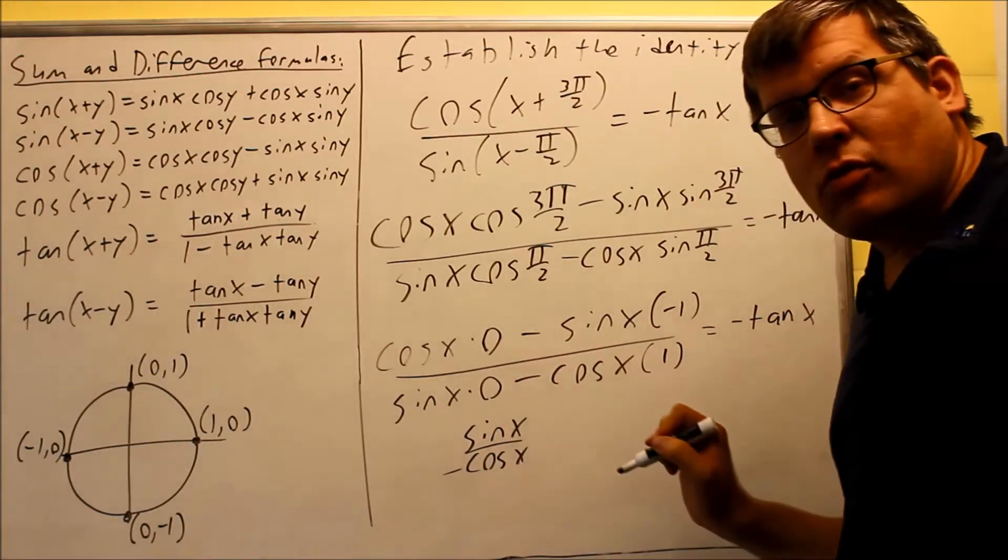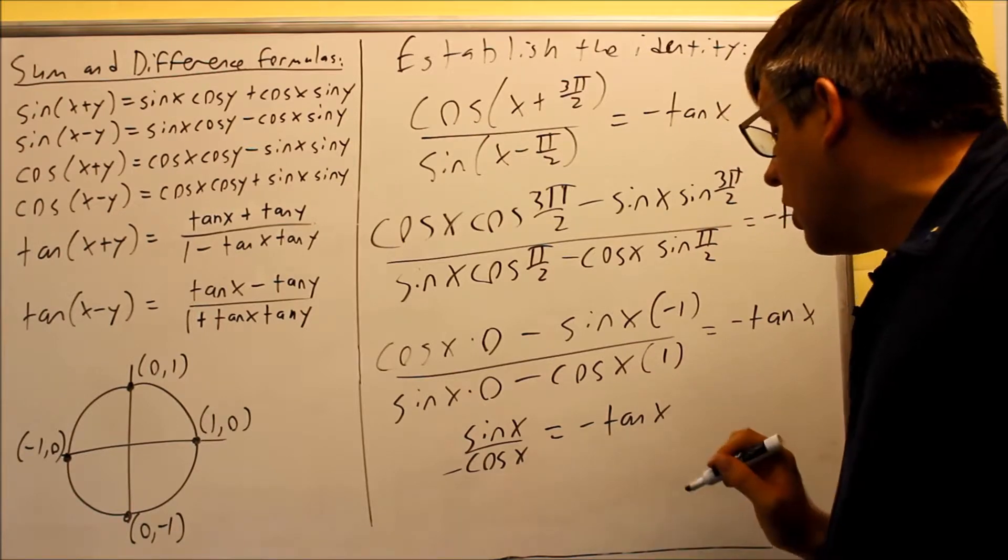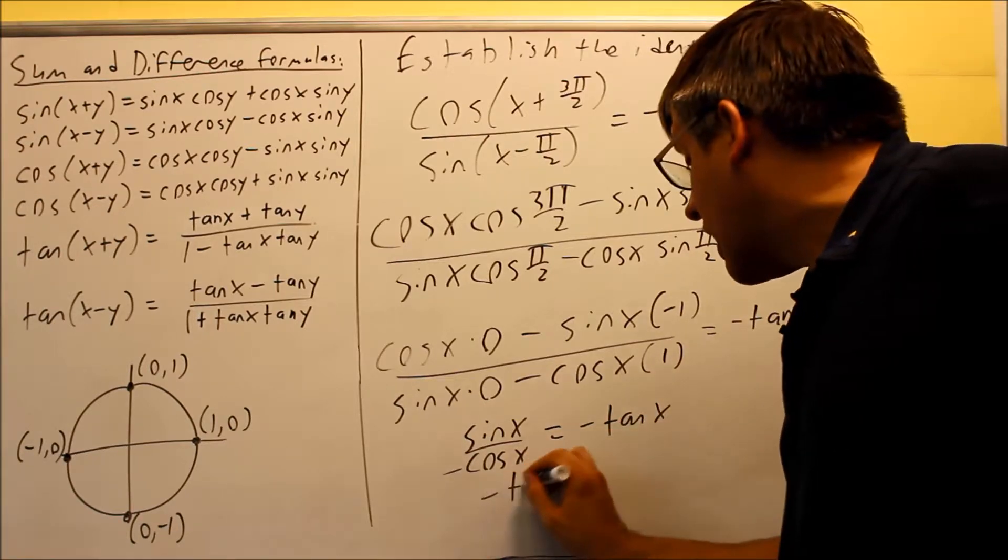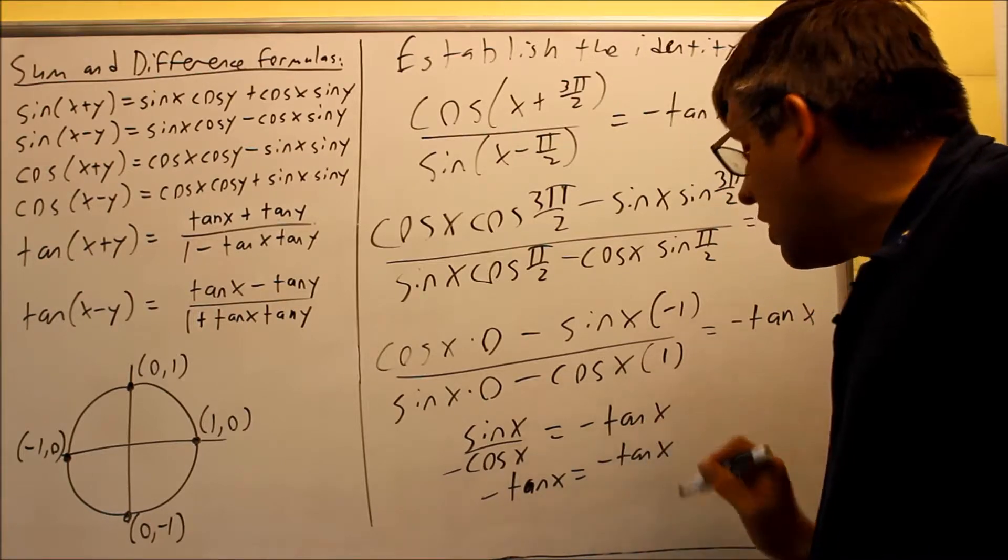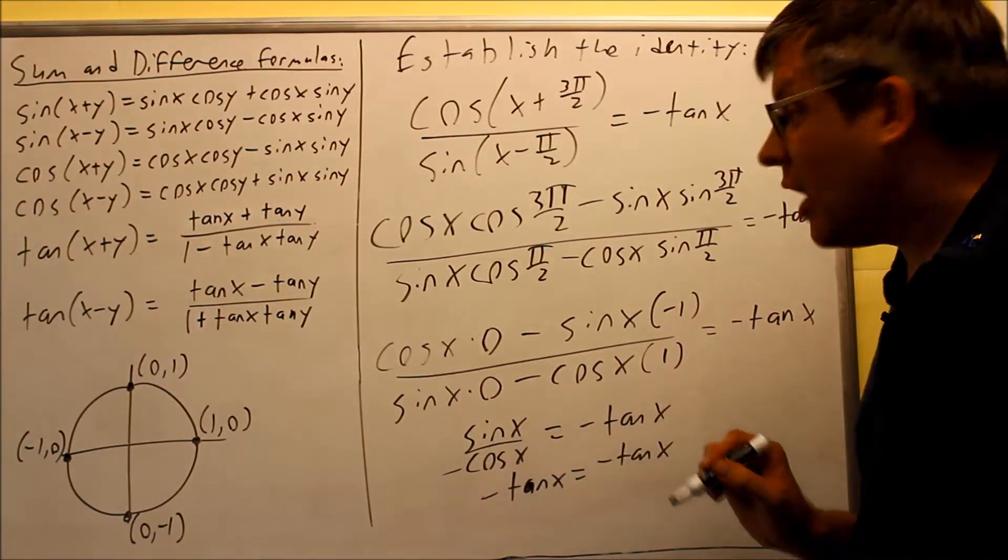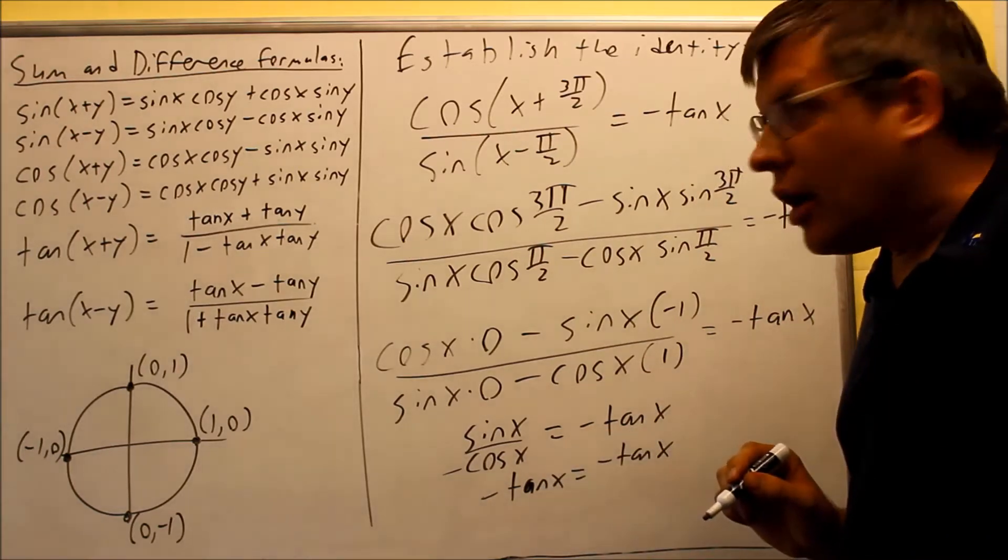But this is an identity that I can recognize. That can be changed into negative tan x. So basically, I can just make both sides the same. Negative tan x equals negative tan x. I put the identity in for that one. And now I work one side all the way down until it equals the right-hand side.